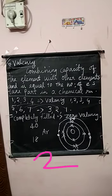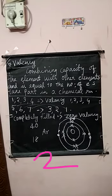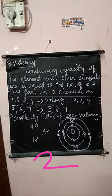What is valence shell? The outermost shell of an atom is the valence shell, and the electrons present in that valence shell are valence electrons. Then what is valency? Valency is nothing but the combining capacity of an element with other elements. An element's combining capacity with other elements — the number of electrons that take part in a chemical reaction — is called valency.